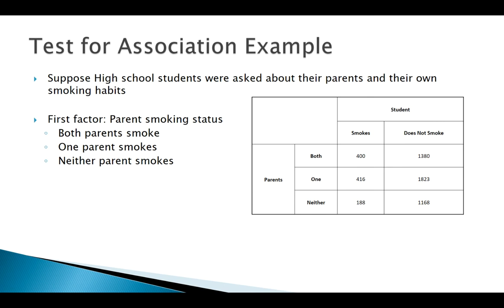We have two variables, or what we might call two factors here: we've got our parents' smoking status and our students' smoking status. This is a two by three table, and I want to look and see if there is an association here.